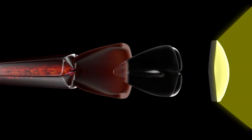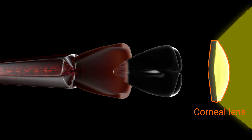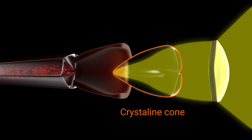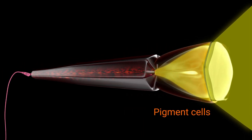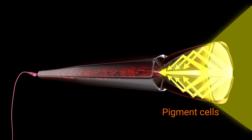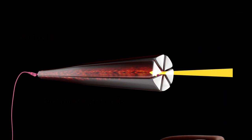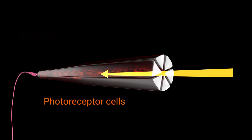Light photons first pass through a clear corneal lens. This lens is the hexagonal shape you can actually see on the surface of the eye. The light then passes into the crystalline cone, which focuses and channels the light further down into the structure. The crystalline cone is surrounded by pigment cells. These work like an opaque sheath — they wrap around the cone and block light from spilling over into neighboring ommatidia. So the light is contained and focused by the crystalline cone toward the center of another group of cells called photoreceptors.